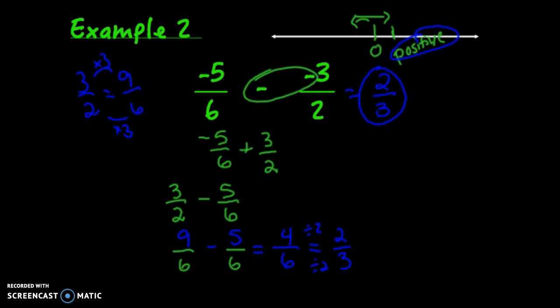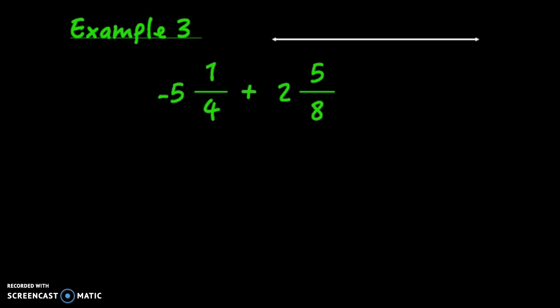Let's do one last example with mixed numbers. We're looking at negative 5 and 1/4 plus 2 and 5/8. Think about the number line again: you're going negative 5 and 1/4 to the left, then coming back 2 and 5/8. But 2 and 5/8 is not bigger than 5 and 1/4, so you'll end up in the negative still.